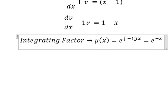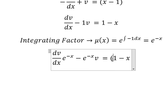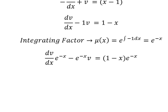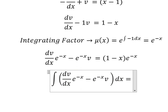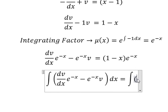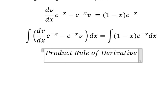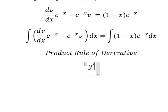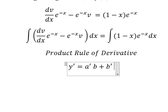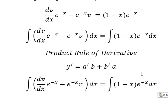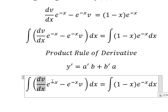So we need to find mu of x, equals to e to the power of the integral. We see that negative 1 is next to v — this is for the integrating factor. That means we multiply both sides by this one. Next, we need to integrate both sides. We need to use the product rule of the derivative. So we have the derivative of y equals to the derivative of a multiplied by b, plus the derivative of b multiplied by a.